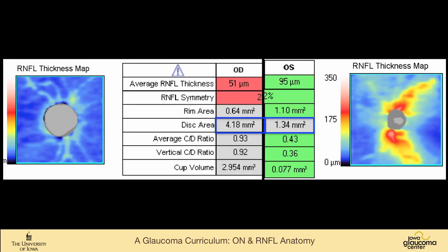This image also appears in the optic nerve exam part of this curriculum. These are optic nerves of two different people. The right optic nerve has a disc area of 4.18 square millimeters. The left eye, again a different person, has an optic disc area of 1.34 square millimeters. That's a difference of over three-fold.